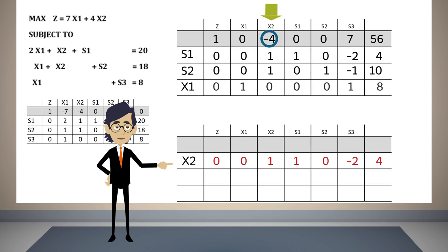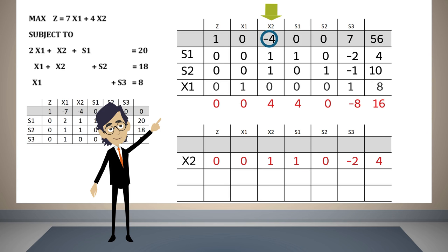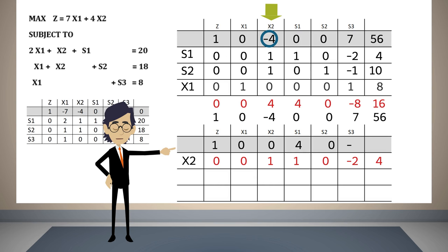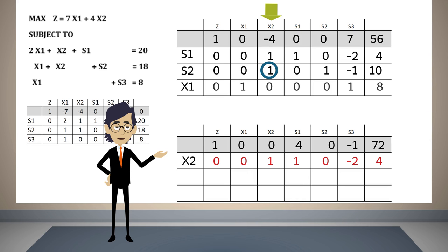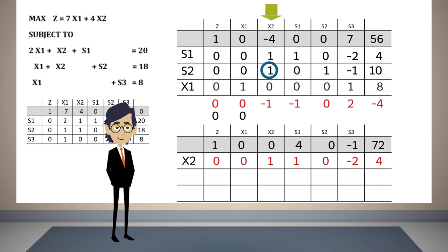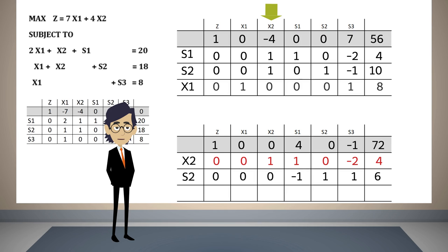We start with minus four: we multiply the pivot row by four and add it to the objective function row, giving the new objective function row. Now we convert into zero the number in the s2 row by multiplying the pivot row by minus one and adding it to the s2 row. Finally, since the number found in the column of x2 and the x1 row is zero, the x1 row in the third table will be exactly the same as in the second table. We have finished the third table.